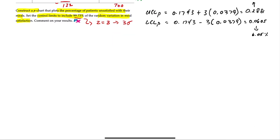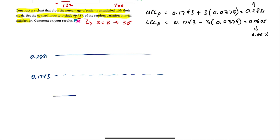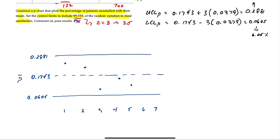Now let's draw the chart. We have a dotted center line at 0.1743, an upper control limit at about 0.2881, and a lower control limit of 0.0605. We have seven days to plot. Day one is 0.24, day two is 0.22, day three is 0.08, day four is 0.15, day five is 0.10, day six is 0.26 — which is way up near the upper limit — and day seven is 0.17, just below the center line. Connecting the dots shows the full graph.